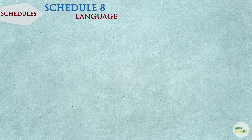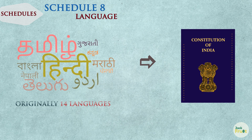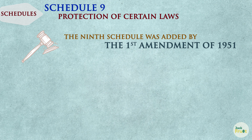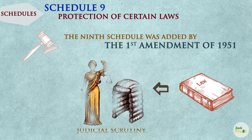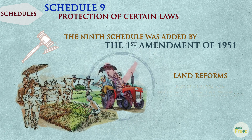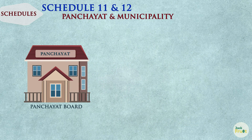Schedule 8 comprises the list of languages recognized by the Indian Constitution. It originally had 14 languages, but now there are 22 in total. The 9th schedule was added by the First Amendment Act of 1951. It says that the laws included under the schedule are to be protected from judicial scrutiny on the ground of violation of fundamental rights. Originally, the 9th schedule consisted of 13 acts dealing with land reforms and the abolition of the Zamindari system, but presently it has 282 acts. Schedule 10 deals with the anti-defection law. Schedules 11 and 12 are about Panchayat and Municipality.